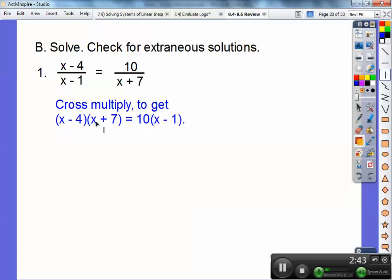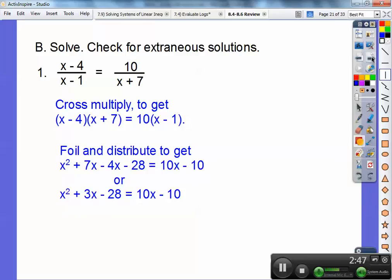I'm going to FOIL and distribute right here. So I get x squared plus 3x minus 28 equals 10x minus 10. Quadratics, it's a quadratic because it's a squared, and quadratics we always want to make them equal to zero. So if they're equal to something else, let's get rid of it. I'm going to subtract 10x from both sides and add 10 to both sides.